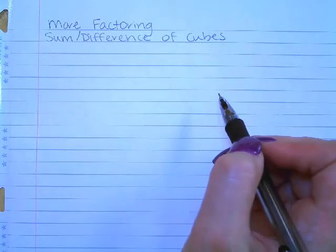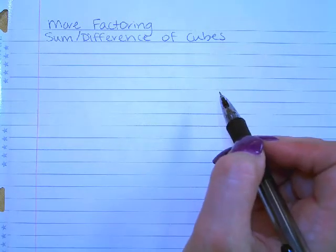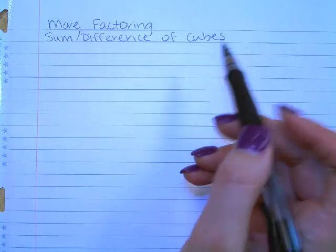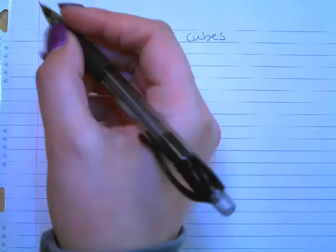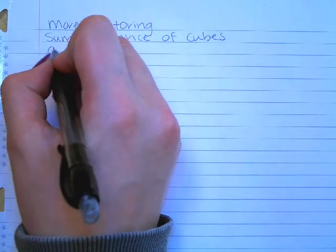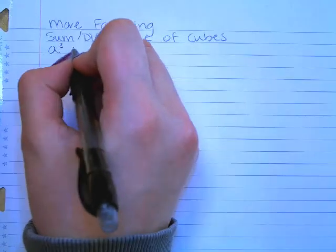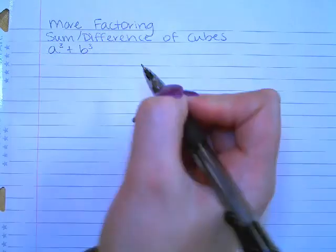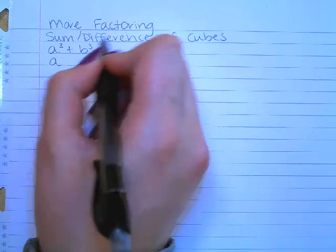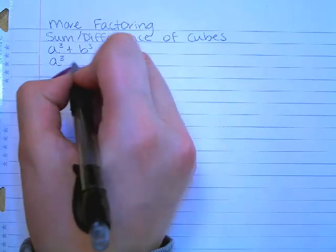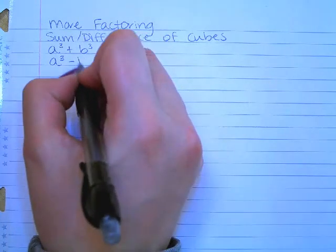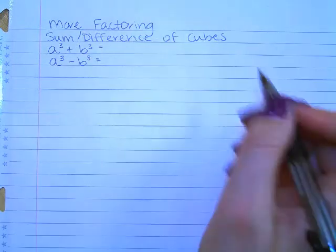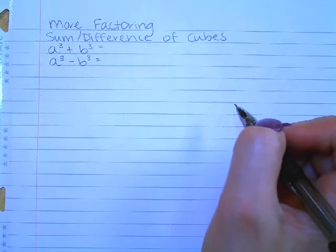We have two formulas for factoring sum and difference of cubes, and they are very similar but they look a little different. The first is for sum of cubes, if you have a to the third plus b to the third. The second formula is for the difference of cubes, which is a to the third minus b to the third. Here is how they are factored.